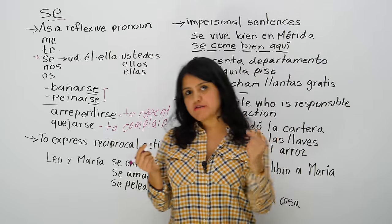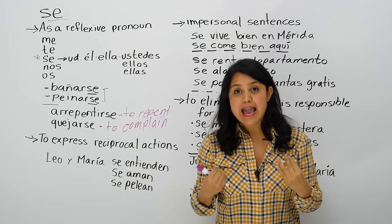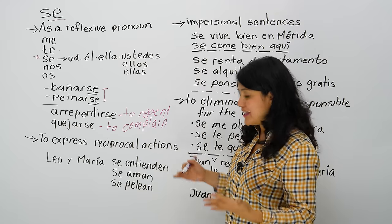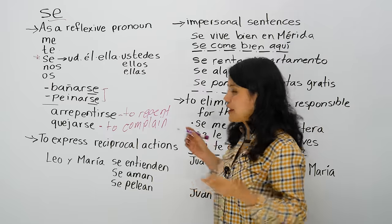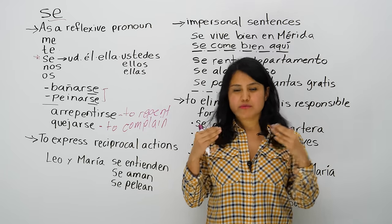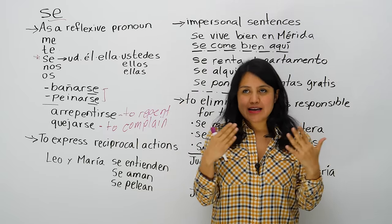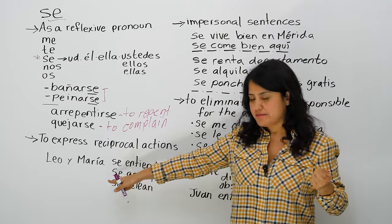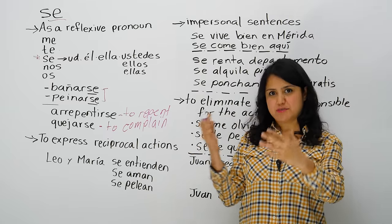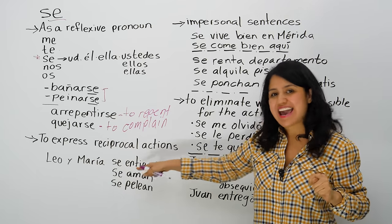That's one of the uses for 'se.' It makes sense that we find it everywhere because it's so common to talk about actions you do to yourself or to part of yourself. Another way we use 'se' is when a verb is reciprocal — when there is reciprocity amongst two people. For example, Leo y María se entienden — Leo and María understand each other. There is reciprocity.